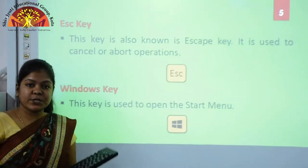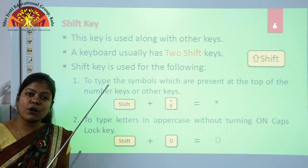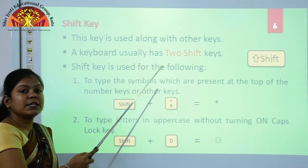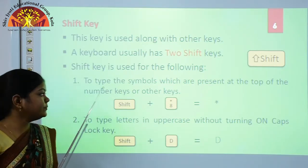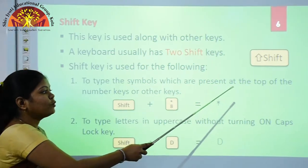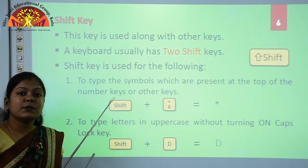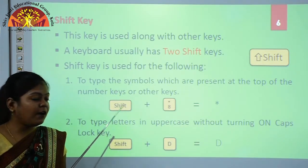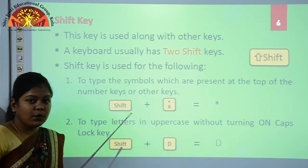Our next special key is the Shift key. This key is always used along with other keys; we cannot use it alone. A keyboard usually has two shift keys — one on the right side and one on the left side. The shift key is used to type symbols which are present at the top of number keys or other keys. To type these symbols, we press the shift key along with the desired symbol key — for example, shift plus the asterisk key types the asterisk symbol.